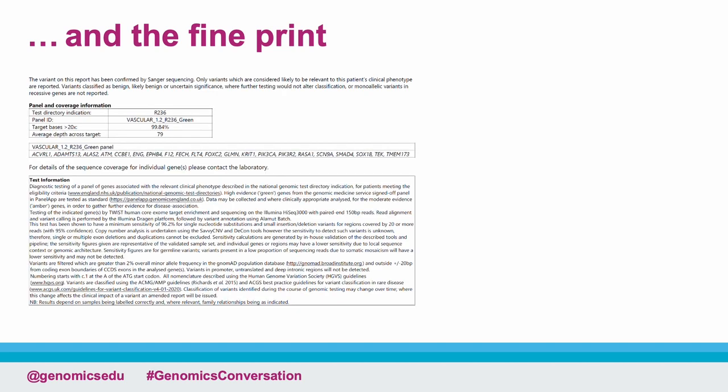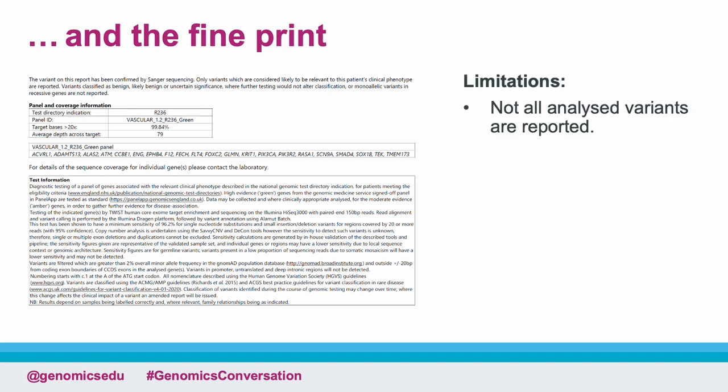And finally, the fine print of a genomic report. Where a clinically actionable variant has not been identified, we often use the phrasing: a molecular diagnosis has not been confirmed or excluded. In other words, we haven't identified a genetic cause, but we also haven't ruled out the possibility that there is one. It is important to remember that there are limitations to both the test and the reporting. Not all analysed variants are fed back — for example, variants of uncertain significance with insufficient evidence. Even if classified as likely pathogenic or pathogenic, only variants relevant to the patient's phenotype are reported.